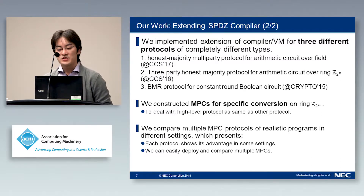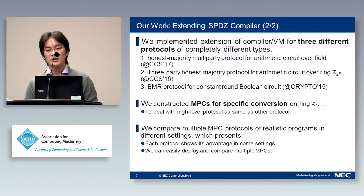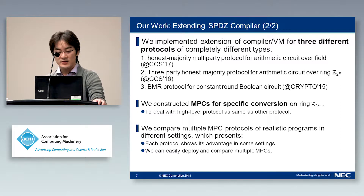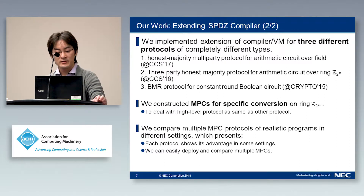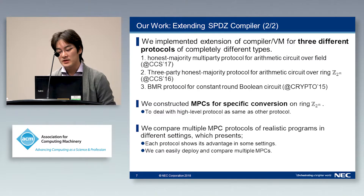The first is the honest majority protocol for arithmetic circuits over a field, proposed at CCS 2017. The second is the three-party honest majority protocol for arithmetic circuits over the ring with modulus 2^20, proposed at CCS 2016. The third is the BMR-based protocol for constant-round MPC for Boolean circuits, proposed at CRYPTO 2015. In addition, we construct specific conversion protocols for the ring-based protocol, necessary for several high-level algorithms that cannot be applied directly to ring-based protocols.